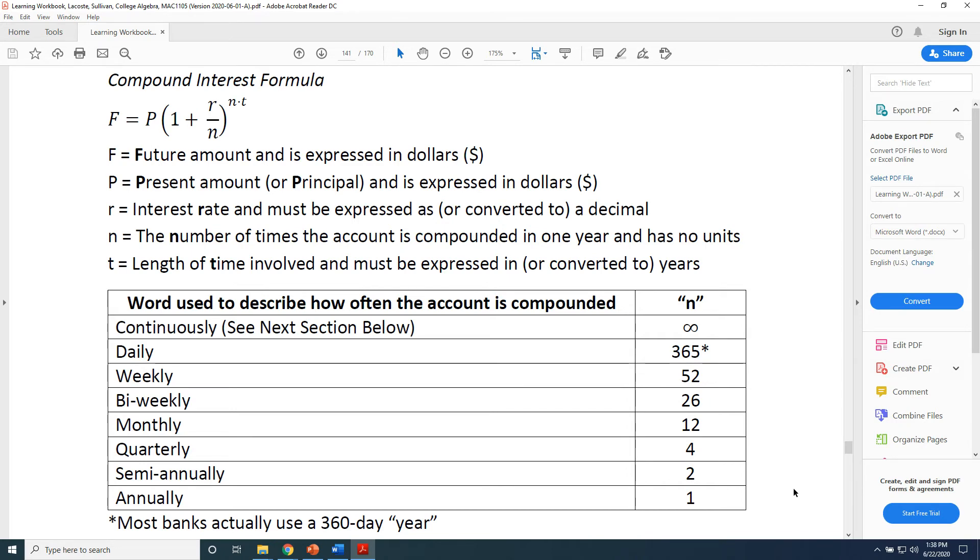Weekly, there are 52 weeks in a year. So if you see that an account is being compounded weekly, you should think that n equals 52.